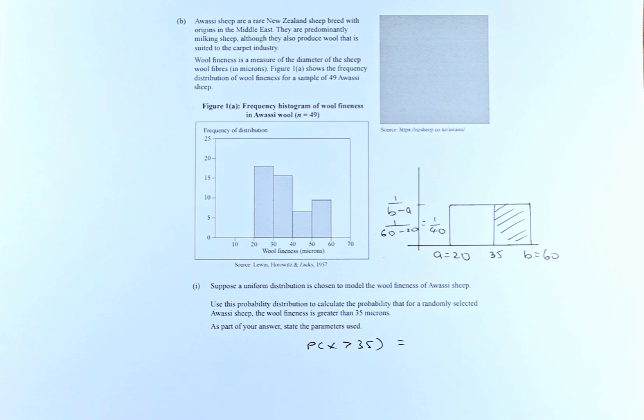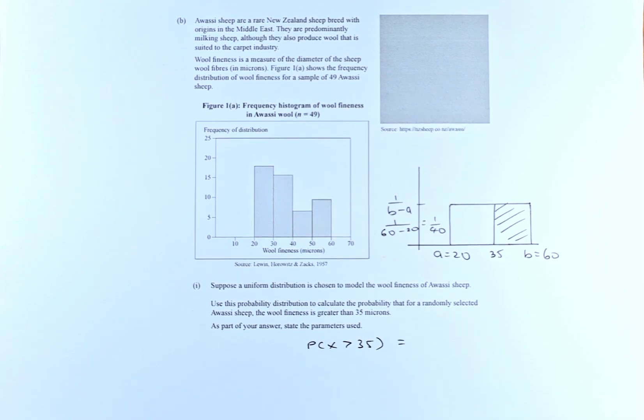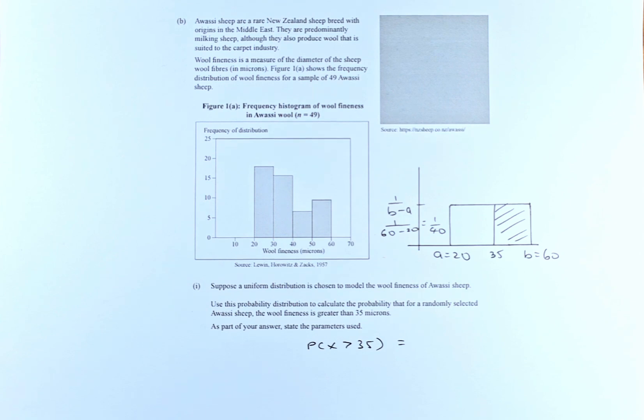So the question sounds like this: Awasi sheep are a rare New Zealand sheep breed with origins in the Middle East. They are predominantly milking sheep, although they can produce wool that is suited to the carpet industry. Wool fineness is a measure of the diameter of the sheep wool fibers in microns. Figure 1a shows the frequency distribution of wool fineness of a sample of 49 Awasi sheep.